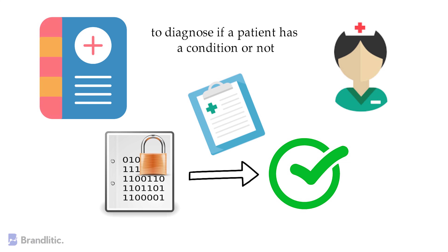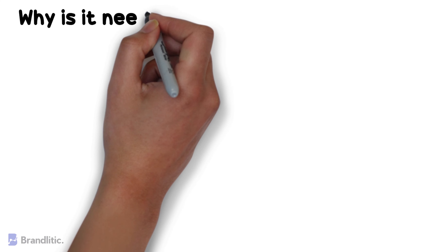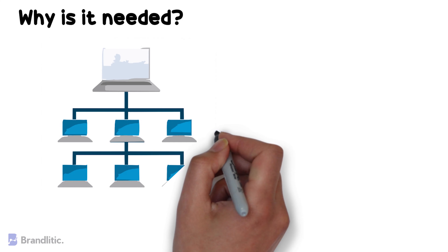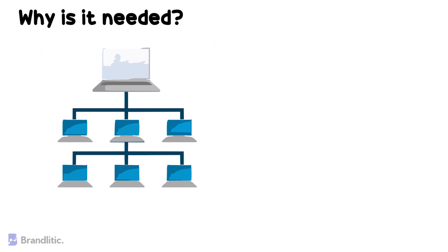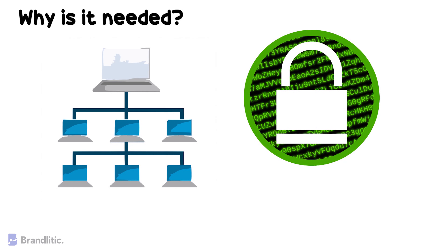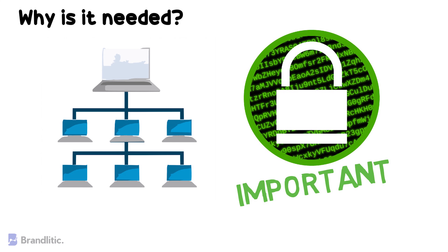If you're still confused, let me explain again why homomorphic encryption is needed in the first place. By sharing sensitive information through any platform, one can easily give away their privacy. On the other hand, being able to modify and perform operations on data while it's still encrypted ensures the privacy of the data, which in today's digital world is highly important.